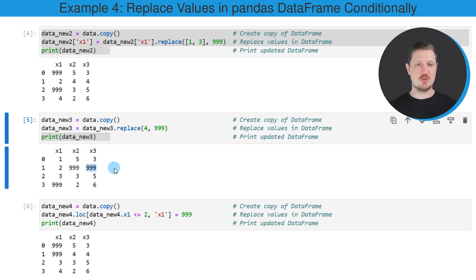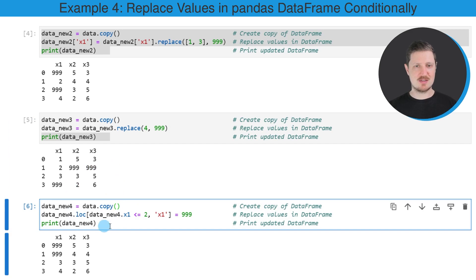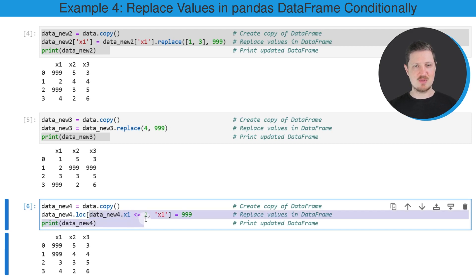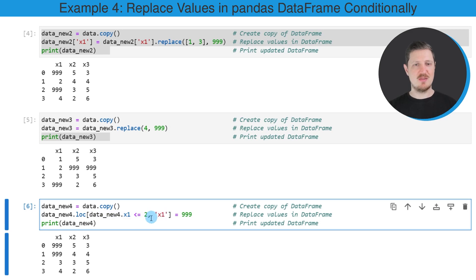And this is what I want to show you in the next example in the last code box of this tutorial. So as in the previous examples, I'm first creating a copy of our data set. And then I'm using the loc attribute and square brackets. And within the square brackets, I'm specifying a logical condition. So in this case, I'm specifying that I want to replace all values in the column x1 that are smaller or equal to the value 2.